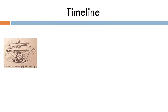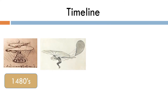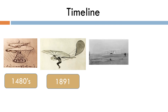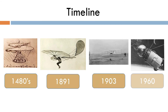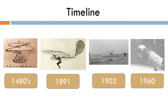A timeline shows the order of events in history and how ideas and inventions have developed — from Da Vinci's untested designs to the first flying man and powered aircraft to modern day exploration of space.